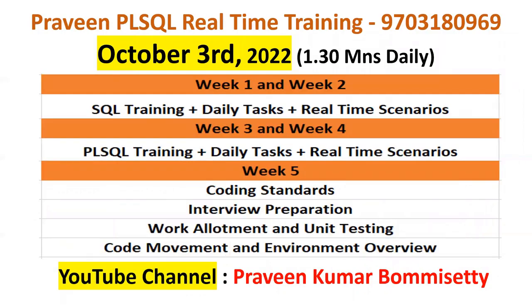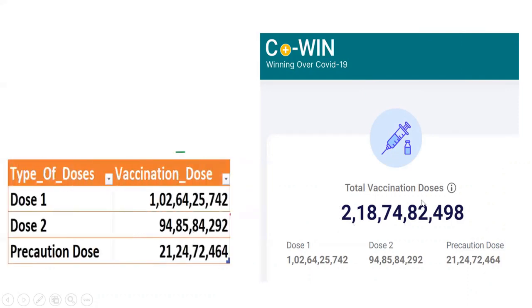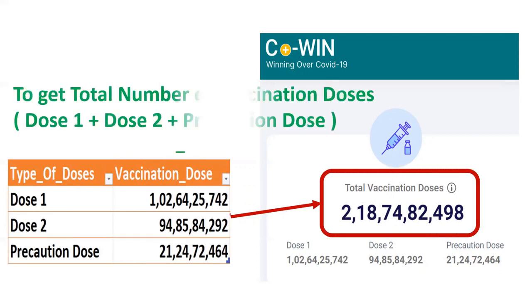Hello, welcome back to my YouTube channel, Praveen Kumar. Today we'll see one of the SQL real-time scenarios. If you see the COVID dashboard, we can see dose one, dose two, precautionary dose, and total vaccination doses. This is the table output I want to get. I want to club — I want to add dose one, dose two, and precautionary dose together.